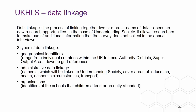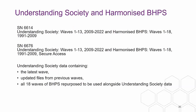On data linkage, we offer linkages with geographical identifiers, administrative data (education, health, economic circumstances, transport), and organisational linkages. We already offer harmonised datasets: for example SN6614 contains Understanding Society data waves 1 to 13 (2009–2022) and harmonised BHPS waves 1 to 18 all in one dataset, saving researchers considerable harmonisation work. A secure access version is also available with the latest waves, updated files from previous waves, and all 18 waves of BHPS.